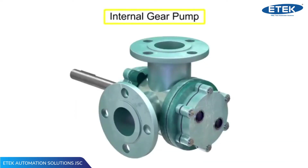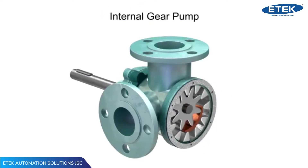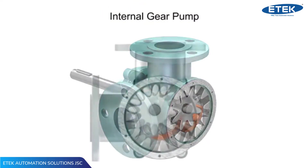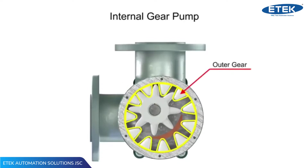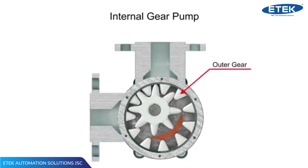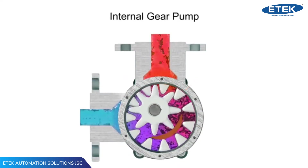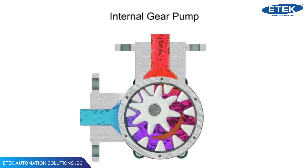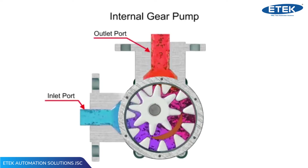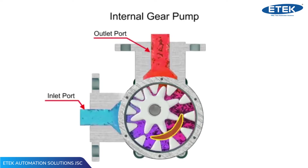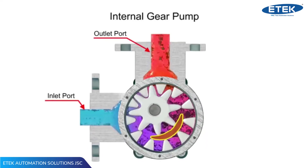Internal gear pumps are exceptionally versatile. This type of pump has one inner gear which is inside a second outer gear. The inner gear has a shaft driven by a motor and has teeth that protrude outward. The outer gear has teeth that protrude inward toward the center of the pump. As the inner gear rotates, it meshes with and moves the outer gear. Liquid is trapped in the gear spaces and carried from the inlet to the discharge.